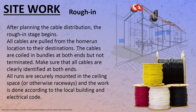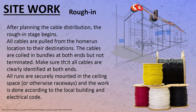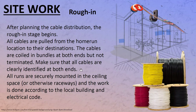Bill the client after all the wires are roughed in — another stage billed. In the rough-in stage, all cables are pulled from the home run location to their destinations, coiled in bundles at both ends but not terminated. Make sure all cables are clearly identified at both ends — just like we practiced in the patch panel lab, labeling cables at both ends. All runs are securely mounted in the ceiling space or raceways, and work must comply with local building and electrical code.